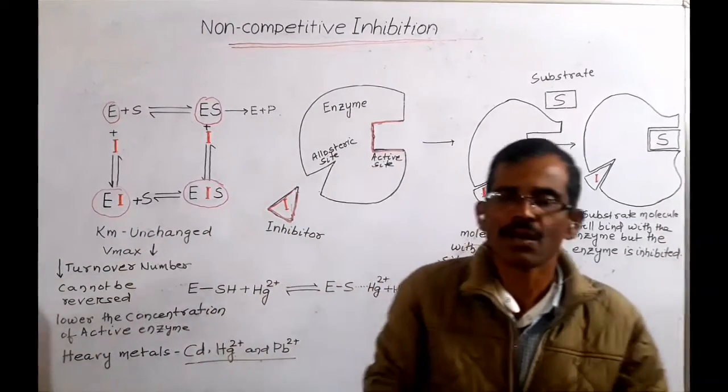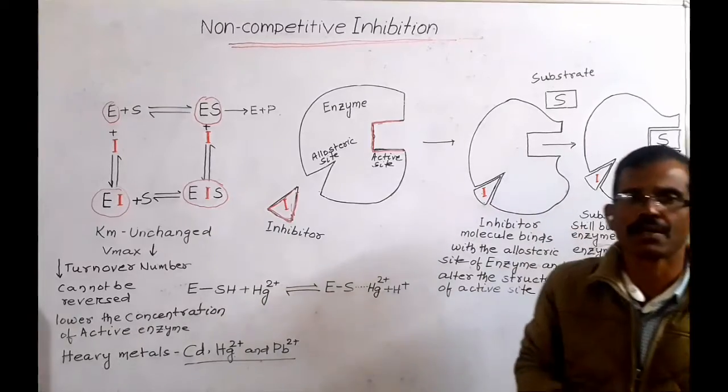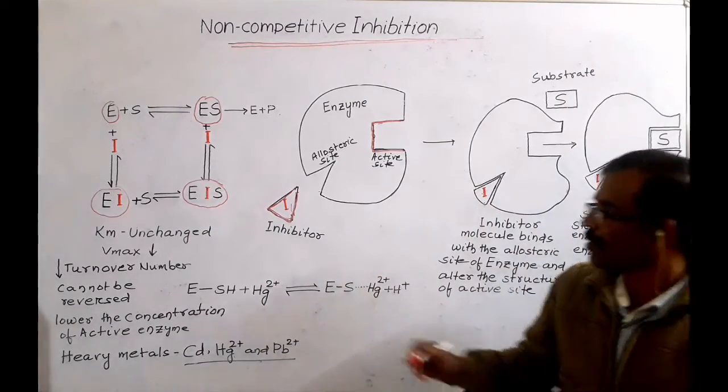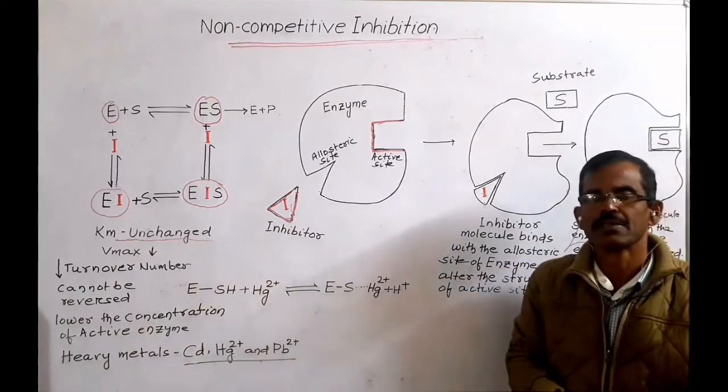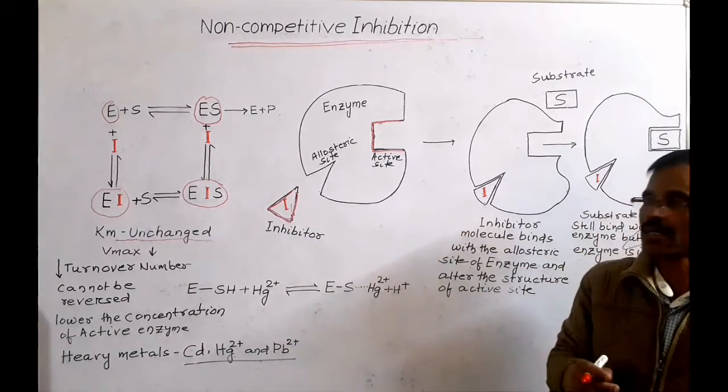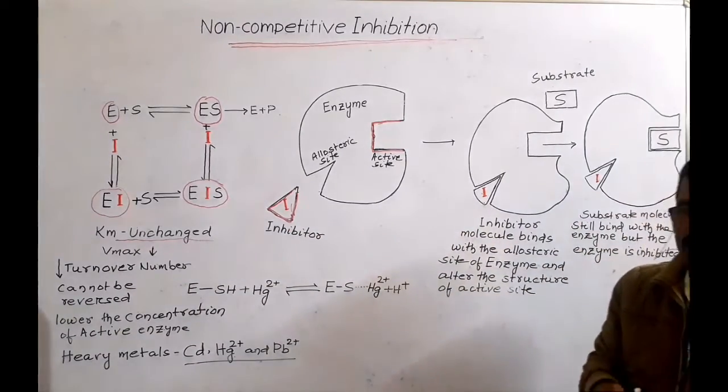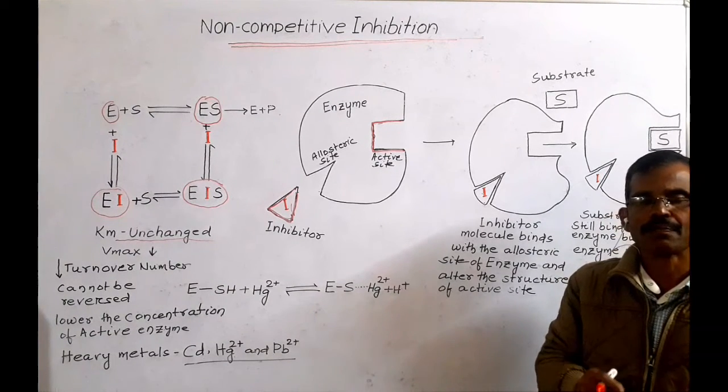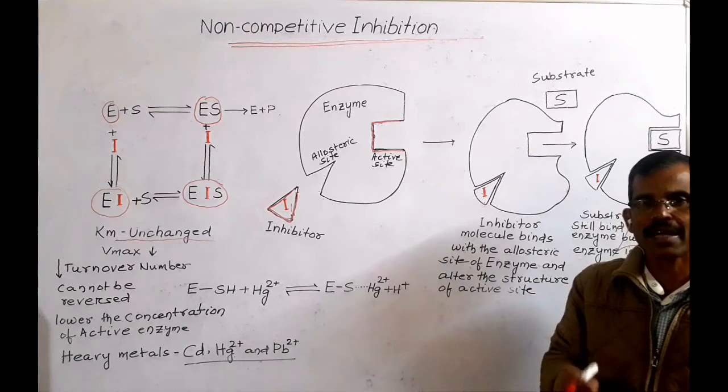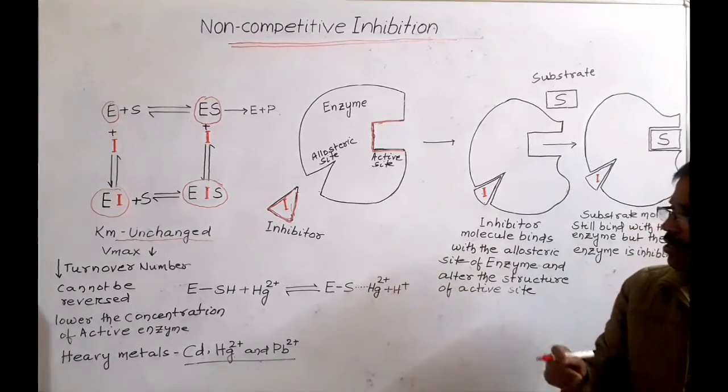In case of non-competitive inhibition, the value of Michaelis-Menten constant remains unchanged, but the maximum reaction velocity decreases. The non-competitive inhibitors lower the reaction rate by lowering the turnover number.